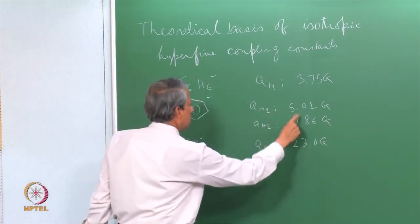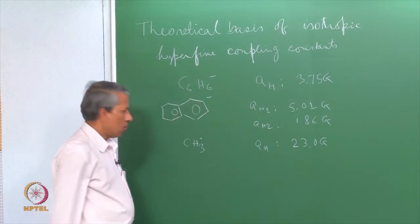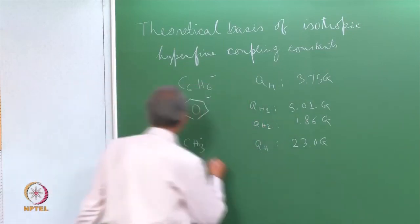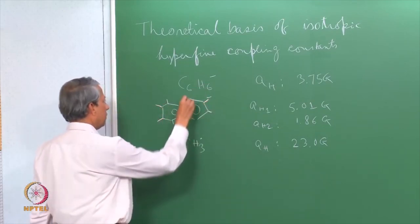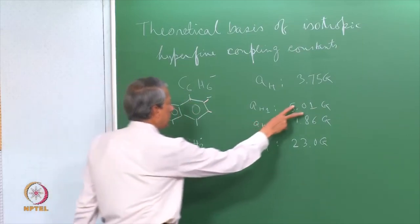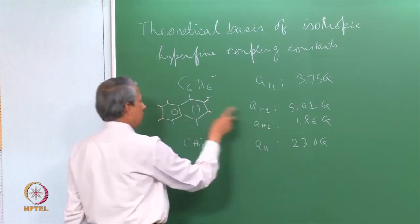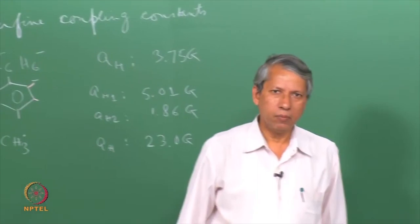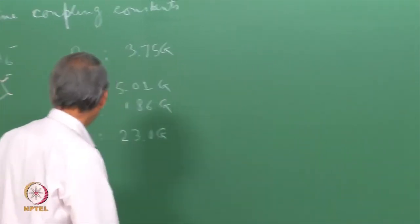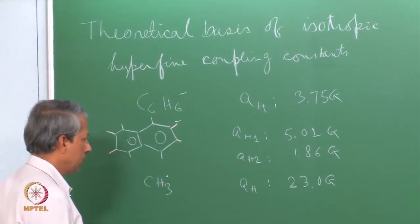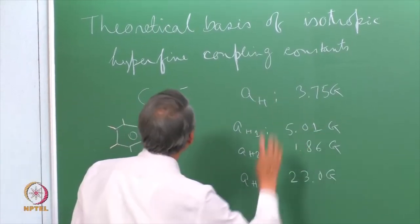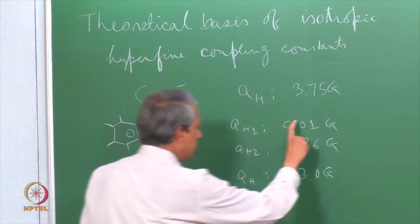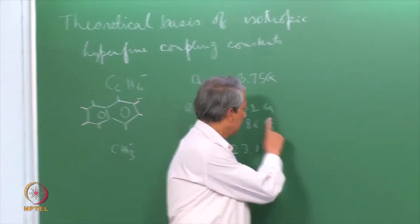Here these two coupling constants correspond to two different sets of equivalent nuclei. From the experiment we get these values, but there is no way we can assign which value belongs to which set. So can theoretical calculation help us in assigning this? That is the aim of today's lecture: to connect the observed value to some theoretical model of the wave function which can either predict this, help us assign it, or allow us to check how good the wave functions are.